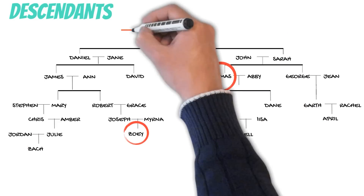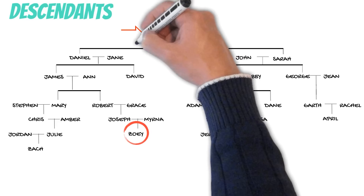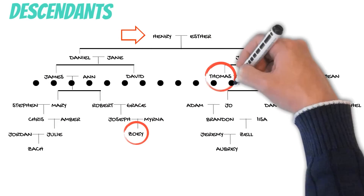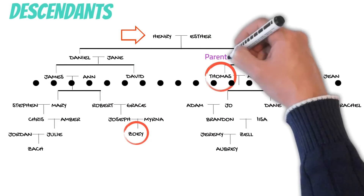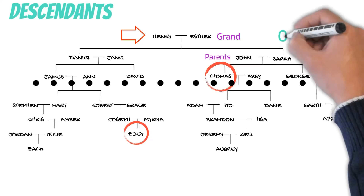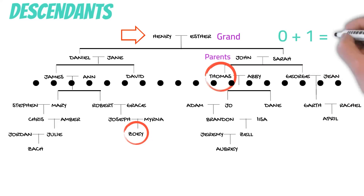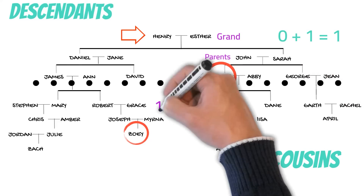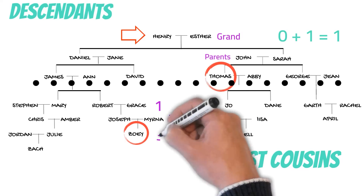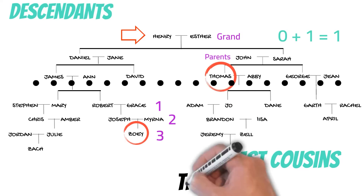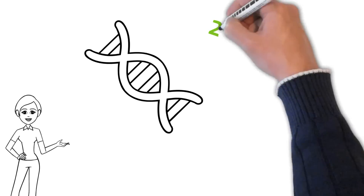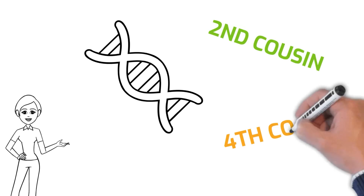Let's take another example: Zoe and Thomas. The cousin relationship of Thomas's generation is zero plus one equals one — so they're first cousins. And Zoe is three generations removed from Thomas, so they are first cousins three times removed.